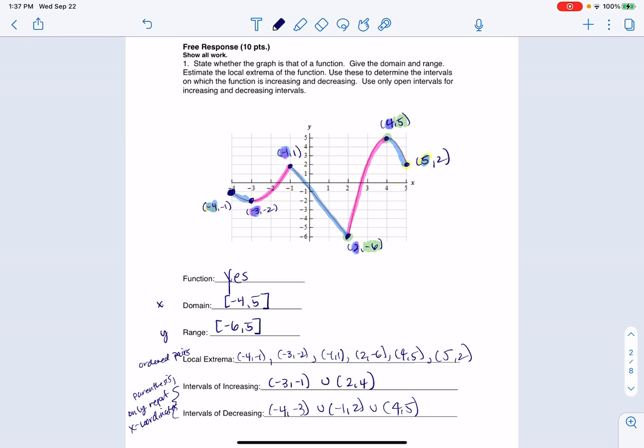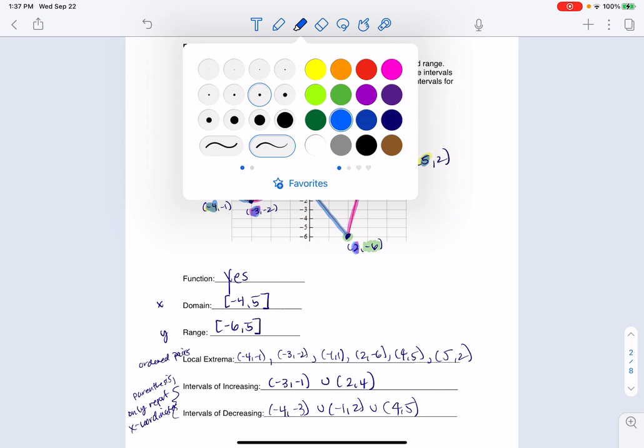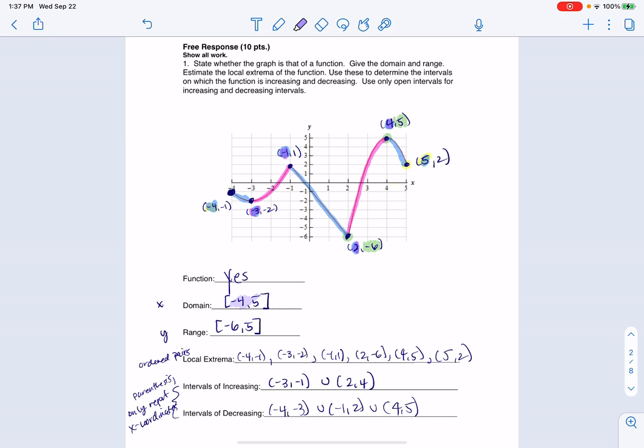And I always do a quick check just to make sure that my intervals of increasing and decreasing spanned my domain. And what I mean by that, if I look at my domain, it was from negative 4 to 5. And then I just try and check. If I look, my intervals of increasing and decreasing, I can see I started at negative 4. I went negative 4 to negative 3, negative 3 to negative 1. Then I went negative 1 to 2, 2 to 4, 4 to 5. So I started at negative 4, and I ended at 5, and that checks out with my domain. So I always do that little check. Now, of course, there are exceptions to this rule if you have a piecewise function with some holes. But this was a continuous function, so it all worked out.